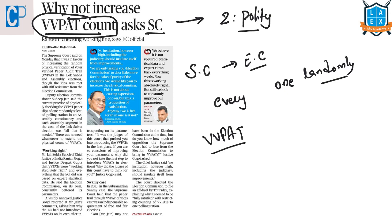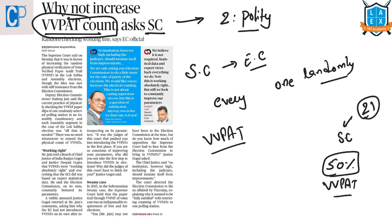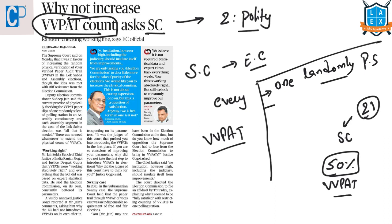Recently, 21 political parties have filed a petition to the Supreme Court seeking to count 50 percent of these VVPAT slips. Responding to this, the Supreme Court is now asking the Election Commission to increase the count of Voter Verified Paper Audit Trail slips. Till now, for legislative assembly elections, one randomly selected polling station in every constituency is taken to count VVPAT slips, and for Lok Sabha elections, one randomly selected polling station in every assembly segment is taken — not even 50 percent of slips are being counted.